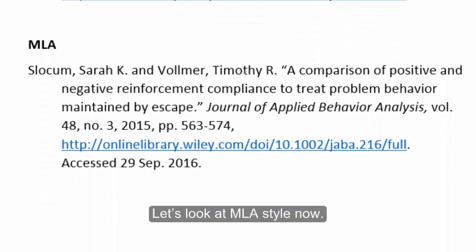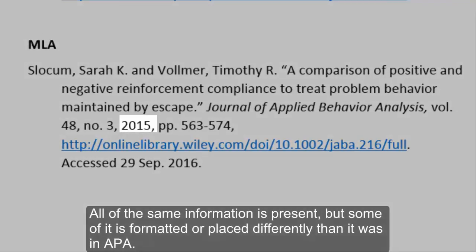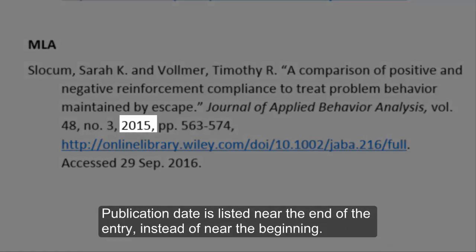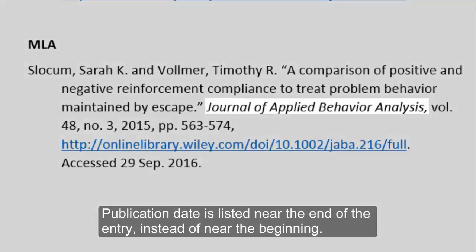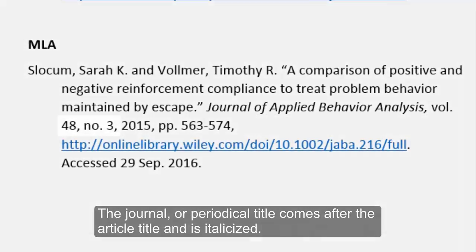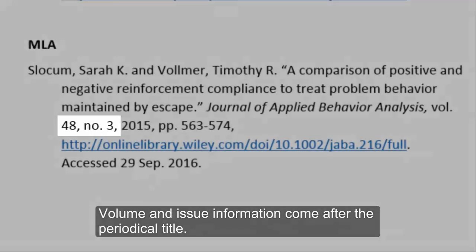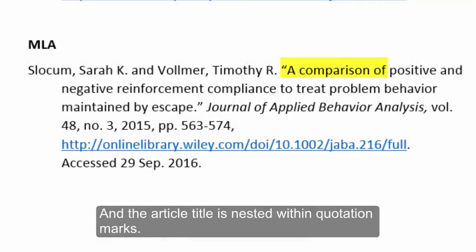Let's look at MLA style now. All of the same information is present, but some of it is formatted or placed differently than it was in APA. Publication is listed near the end of the entry instead of near the beginning. The journal or periodical title comes after the article title and is italicized. Volume and issue information come after the periodical title, and the article title is nested within quotation marks.